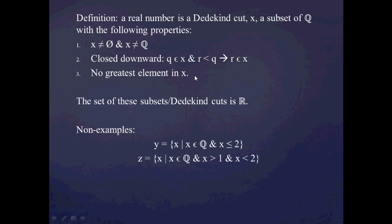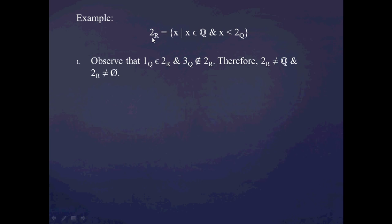To make sure we've understood what a Dedekind cut is, I challenge you to go through two non-examples and show which of the three criteria they fail. Let me give you an example of an actual Dedekind cut: the real number representation of 2, which is all rational numbers less than the rational number 2. To show this is a Dedekind cut, we verify the three criteria. First, we check the set actually contains something — the rational number 1 is in this set since 1 < 2, so it's not empty.